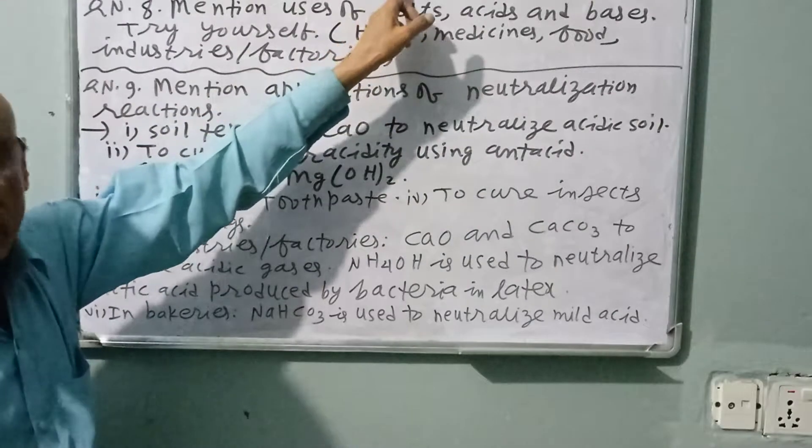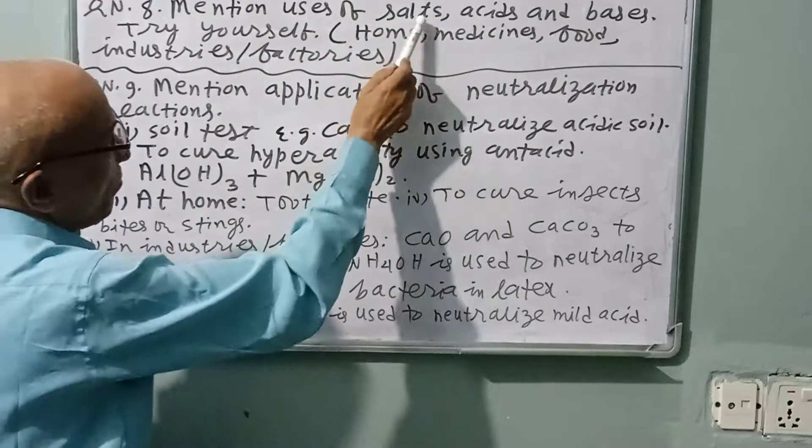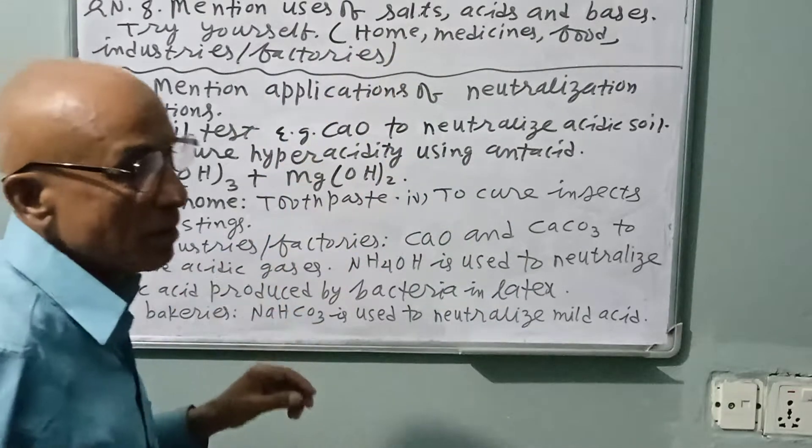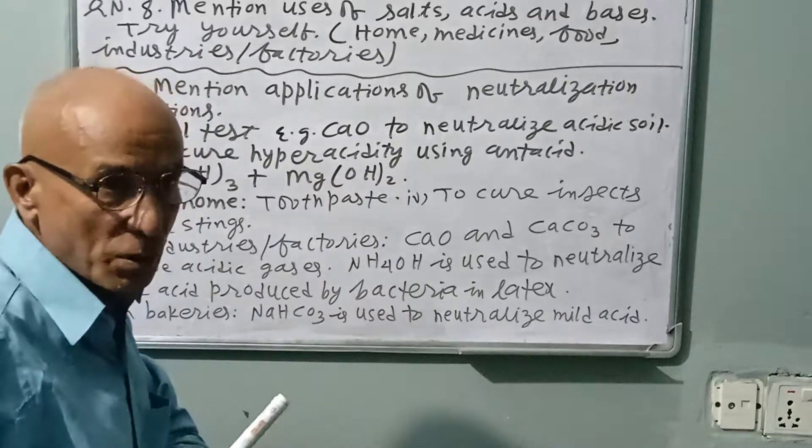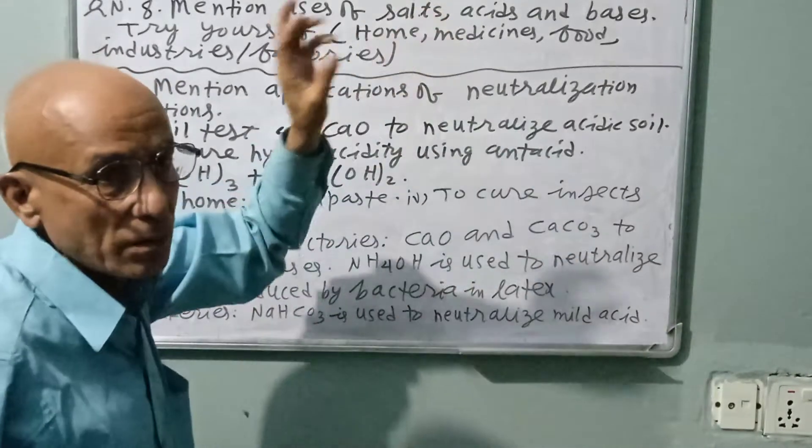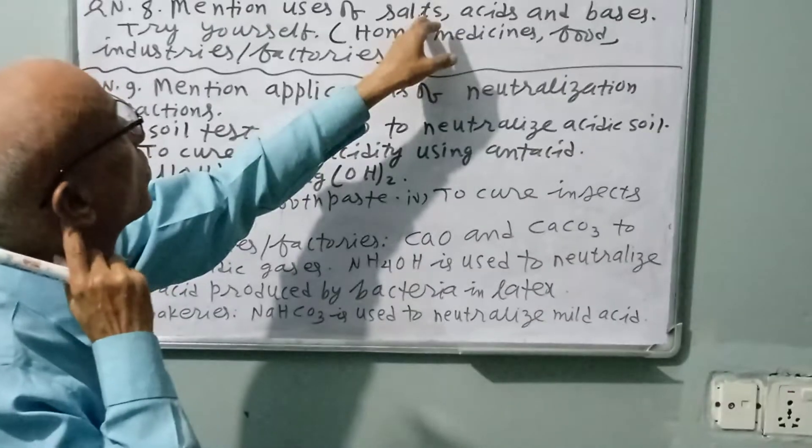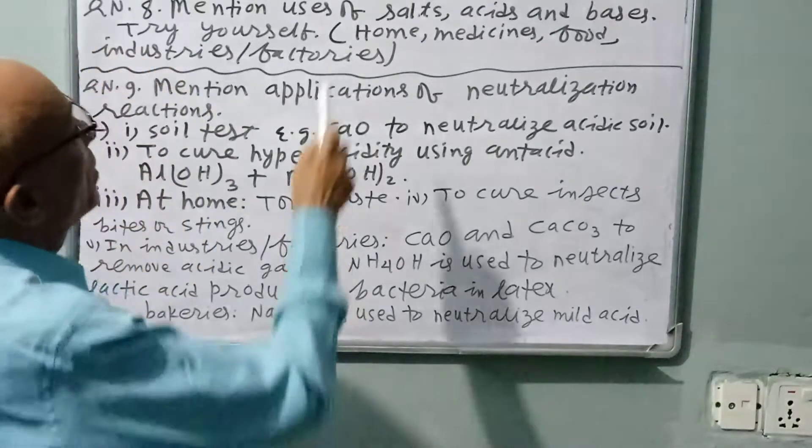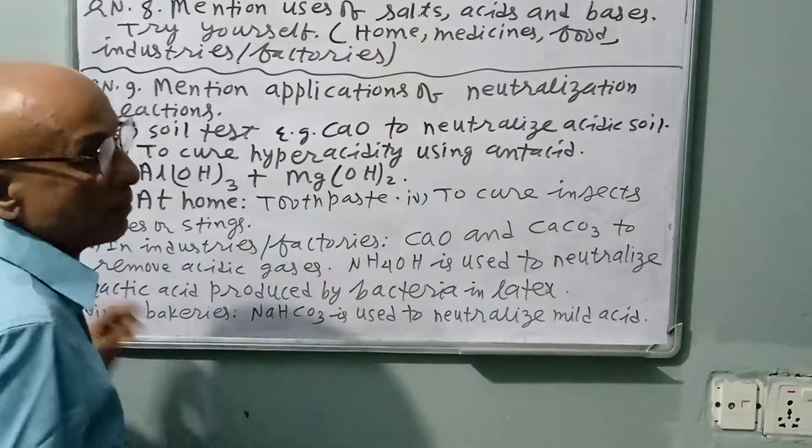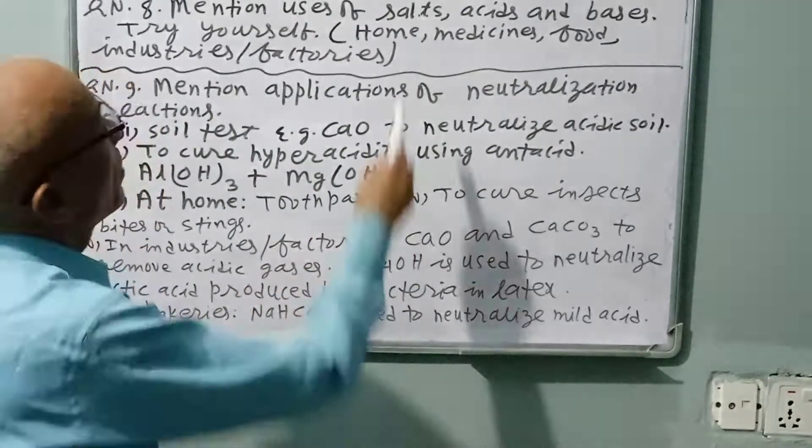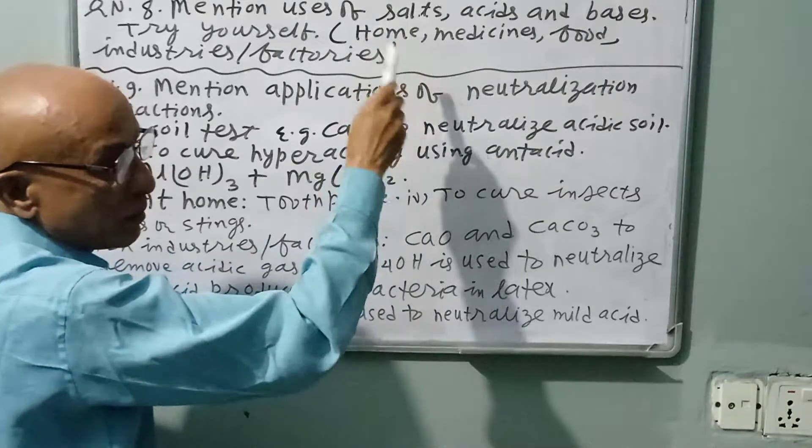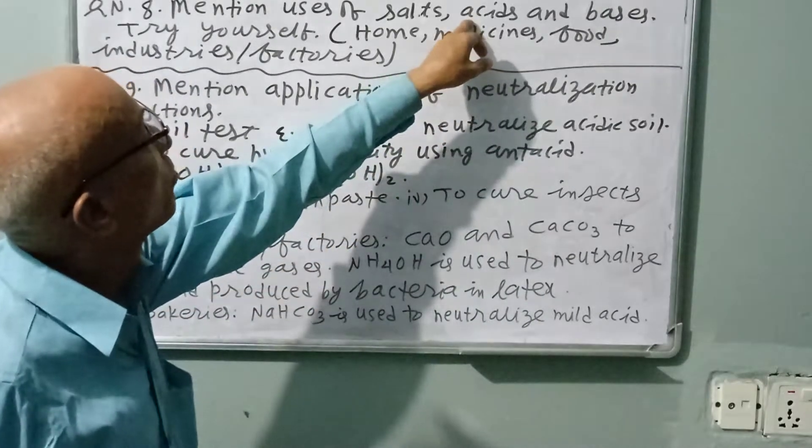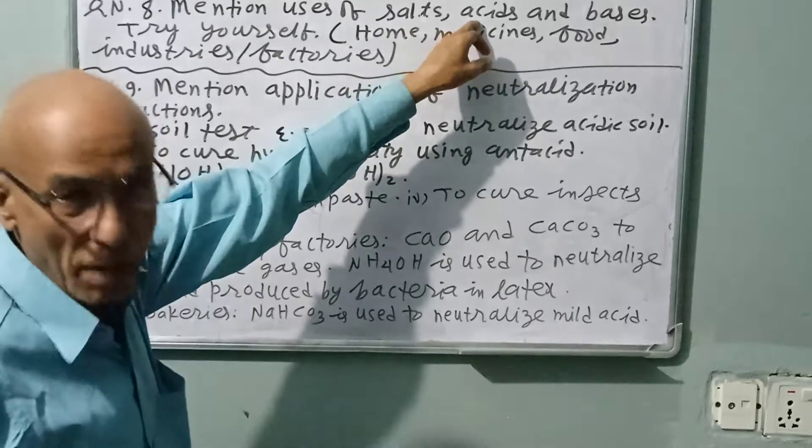Question number 8: Mention uses of salts, acids, and bases. Try yourself first. What are the main uses of salts? Salt is used to produce one salt from another salt. Some salts are used as medicines, as insecticides, and as pesticides. Generally, sodium chloride is a very useful salt. It is used in our kitchens, in food, to make vegetables, meat, and fish tasty.